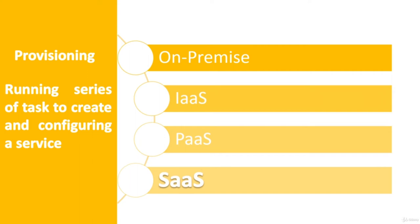SaaS, or Software as a Service, refers to specific software or applications hosted and run on the cloud. Most applications are accessed through a web browser using the internet. You only pay for use of the application, getting the hardware and software associated with it. An example is electronic mail such as Hotmail or Office 365.